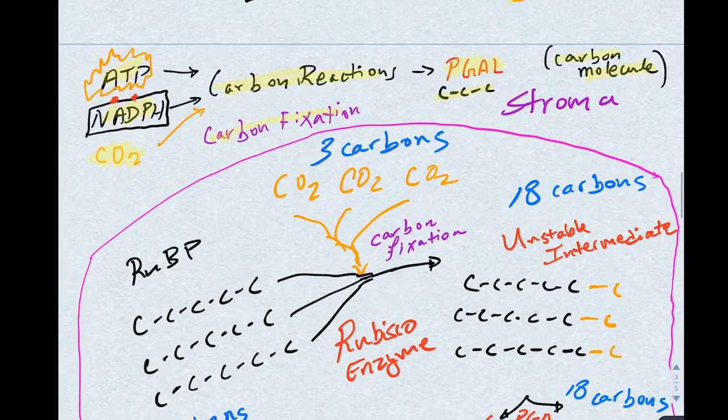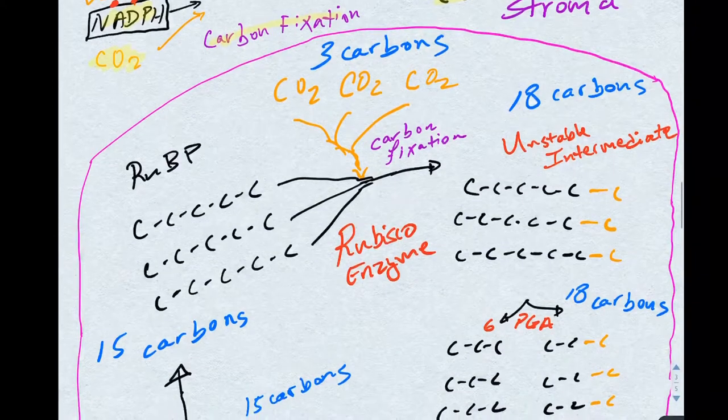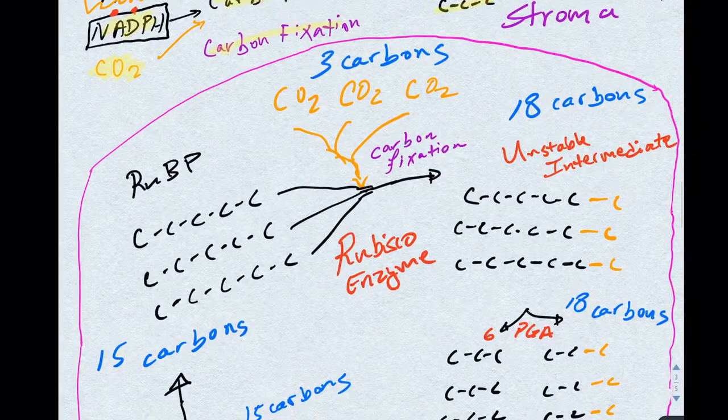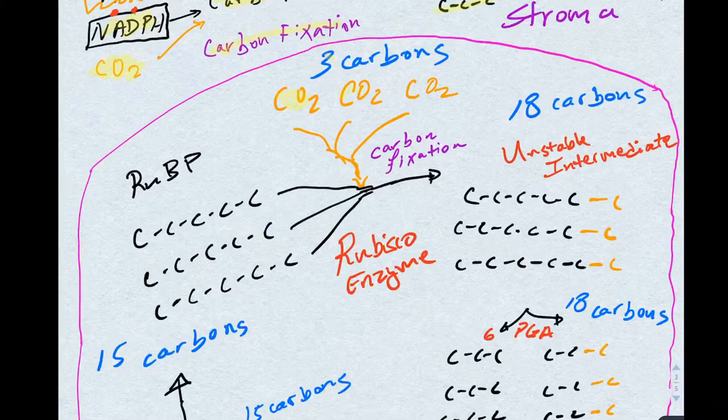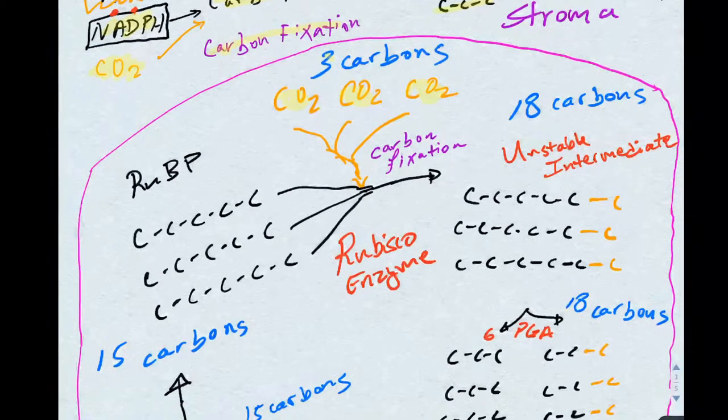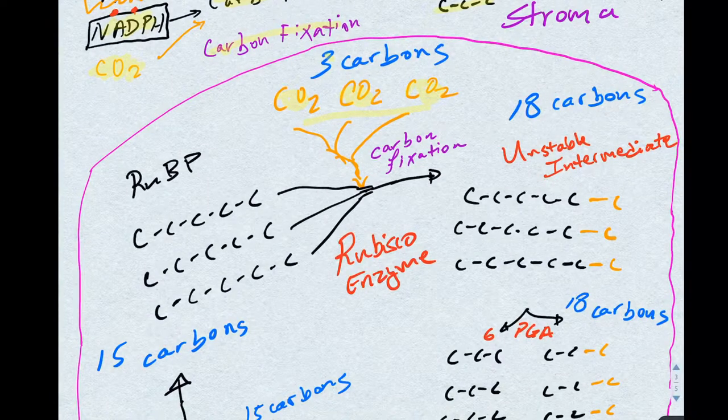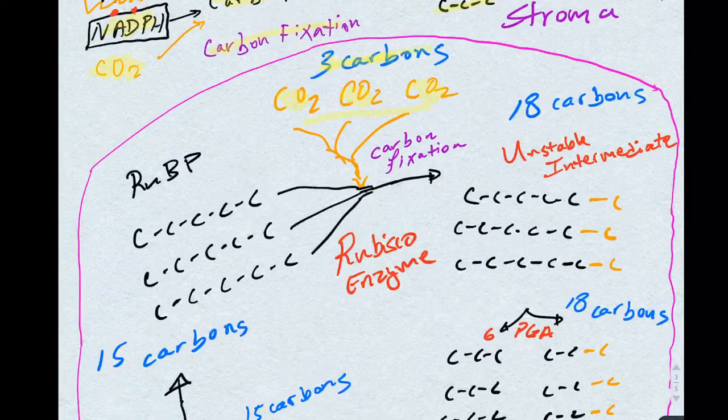Because this PGAL has three carbons, we will follow what happens to three carbon dioxides. If we look at these three carbon dioxides and count up the carbons, we end up having three carbons in total.